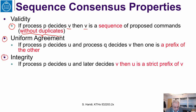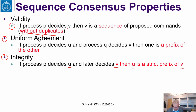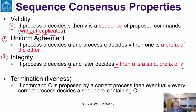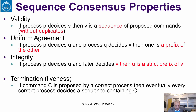Integrity, compared to single value consensus which says you can only decide once: if a process decides a value U and later decides a value V — these are sequences — then U should be a strict prefix of V, meaning U is a shorter sequence and also a strict prefix of V. Termination in this case says if a command C is proposed by a correct process, then eventually every correct process decides a sequence that contains C.